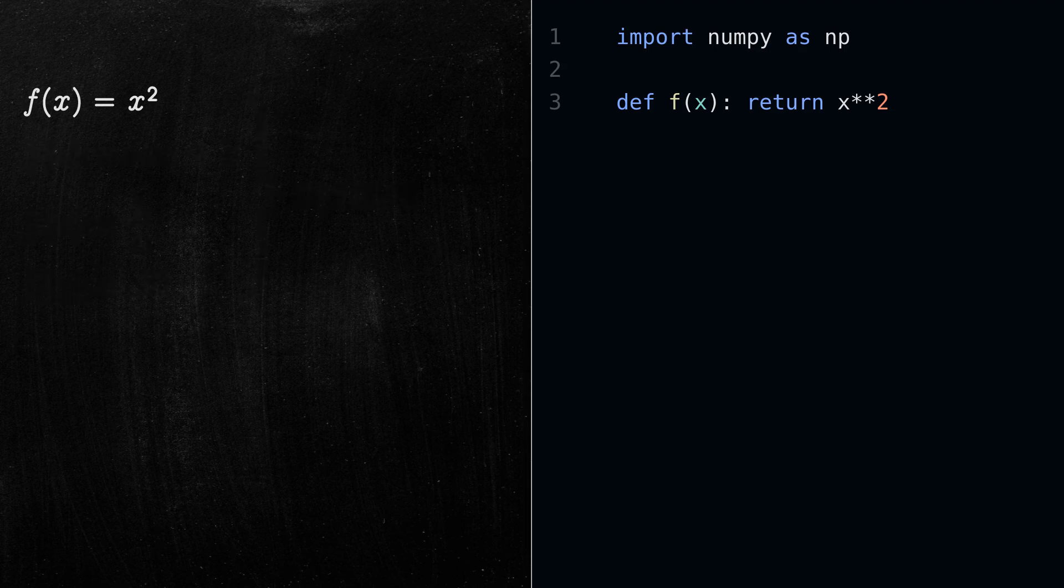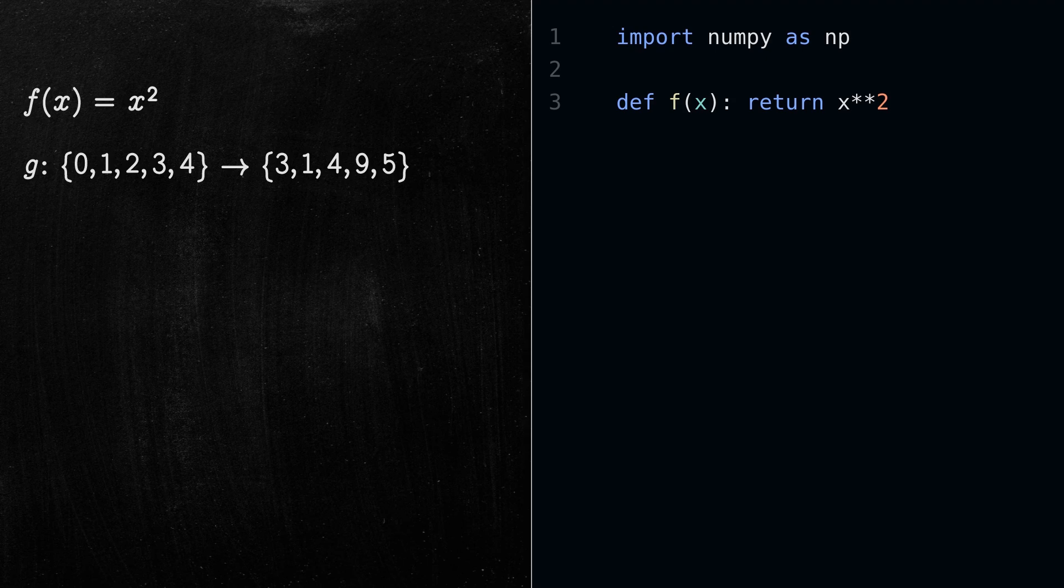The second way to represent a function in code is when we have functions like this. In this case we have a function whose values are not given by an equation, but are arbitrary values. As we all know, this is the domain, and this is the codomain of the function.